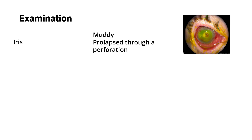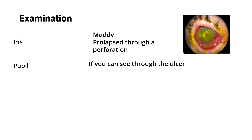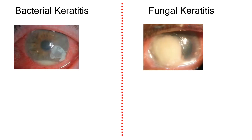Comment on the iris — in iridocyclitis it will appear muddy and the architecture won't be clearly visible. If there's perforation with iris prolapse plugging the ulcer, comment on that too. Comment on the pupil if visible through the ulcer — it will usually be sluggish and constricted. On history and clinical examination you should be able to differentiate bacterial from fungal keratitis, as this is a very common exam question.